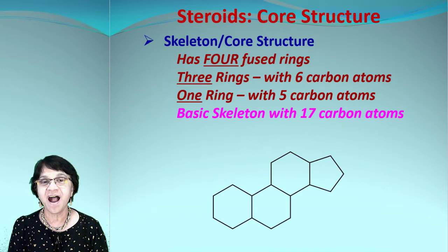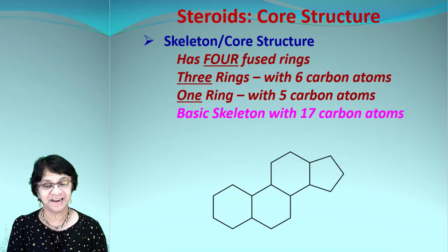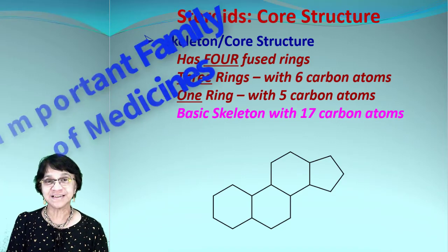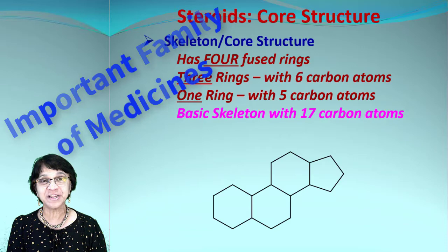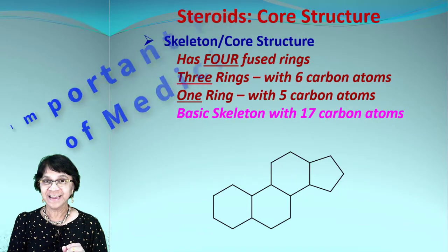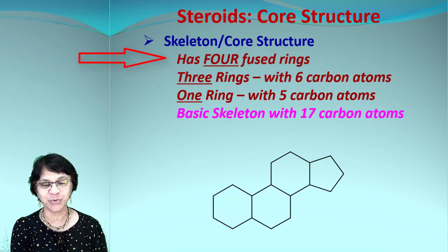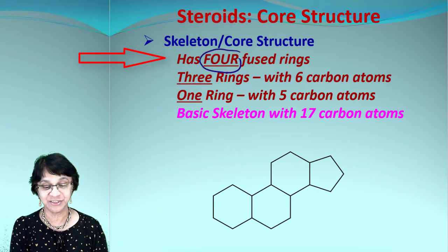Let's begin. First of all, steroids are a very important class of medicines. What are steroids made up of? They have four fused rings. That's the core structure.